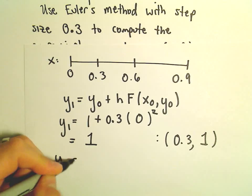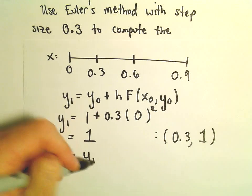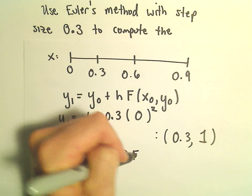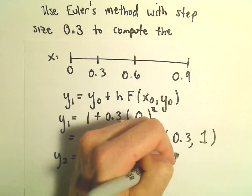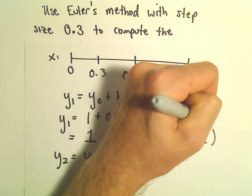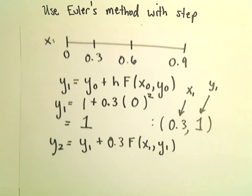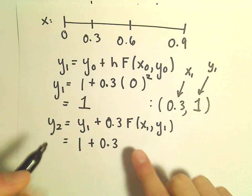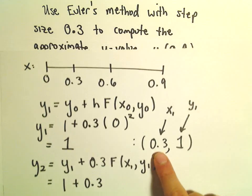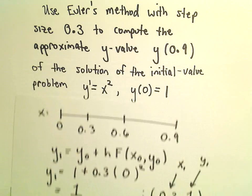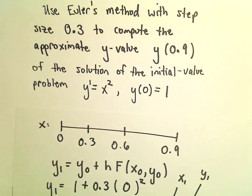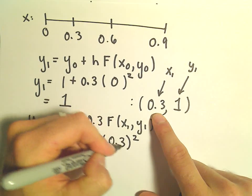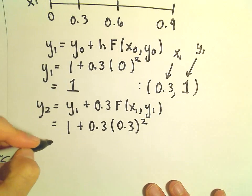So our y sub 2, it says we would take the y1 value plus, again, our step size of 0.3. And then we'll have to take f of x sub 1 comma y sub 1. So, again, this is going to be our x sub 1 value, and this is going to be our y sub 1 value. So it says y1 is 1 plus 0.3. And now into our derivative, we have to plug in 0.3 for x and 1 for y. But there's no y's in the derivative formula. So we're going to take x squared, which is 0.3. And now we'll have to simplify this.